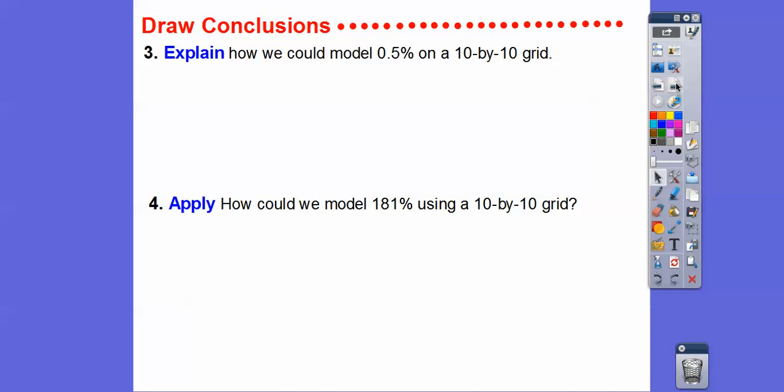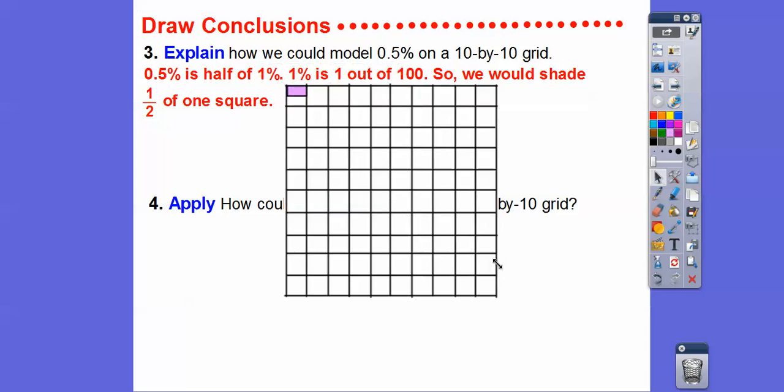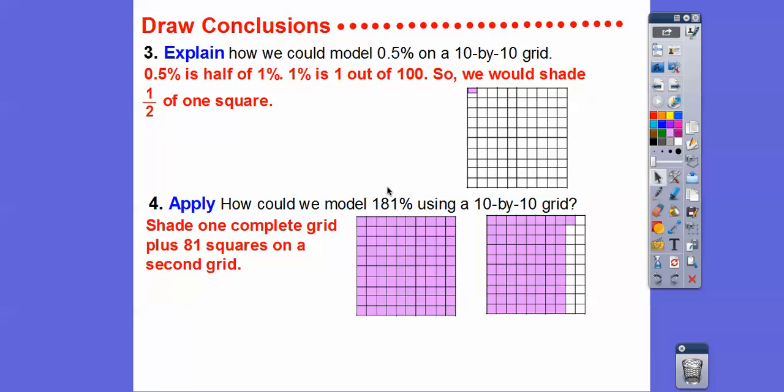How could we model 0.5% on a 10 by 10 grid? This is not 5%. This is not 50%. It's 0.5%. 0.5% is half of 1%. 1 out of 100 would be one whole square. So we'd shade one half of one square. Let me enlarge that right there. So here is one half of one square right there. So we just shade, there's 0.5 of a percent right there. How could we model 181% using a 10 by 10 grid? We'd model one full 100. Here's 100% right here and then 81 right there. So here's 181% right there.